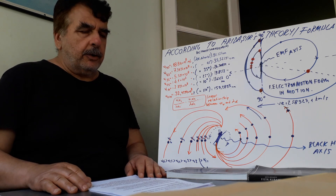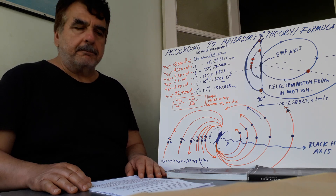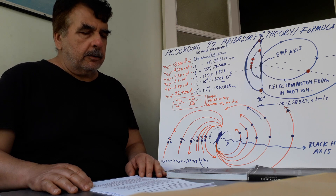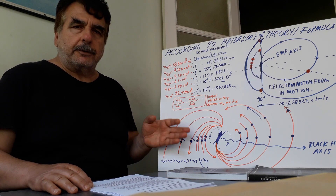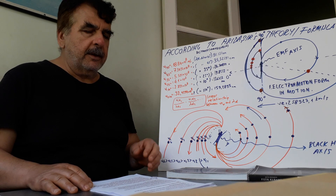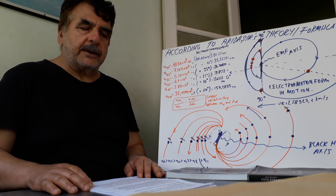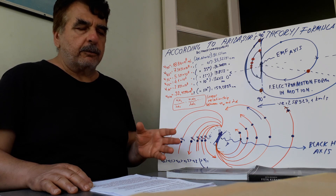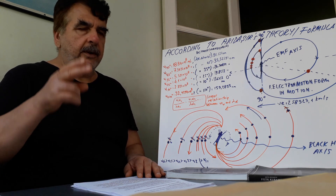As I told you before, electron motion forms and black holes are the same. Black holes are giant electron motion forms. Their successive light waves — whether we say light waves or gravitational waves — are the same.